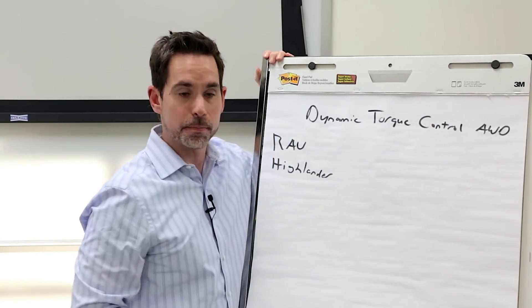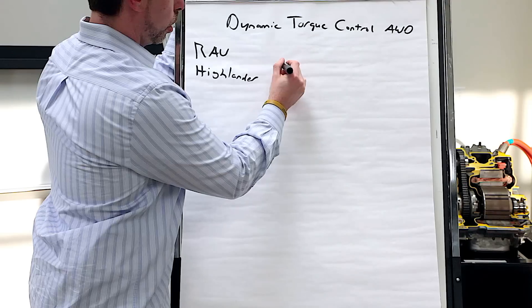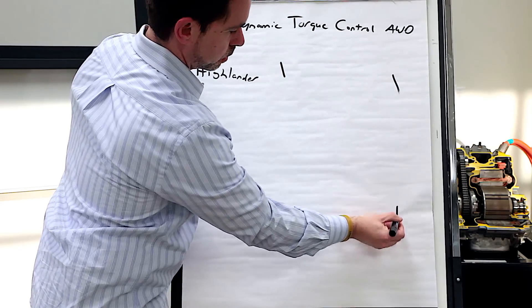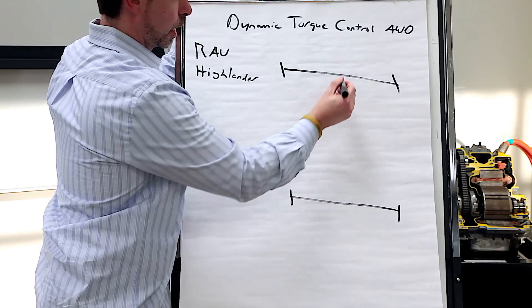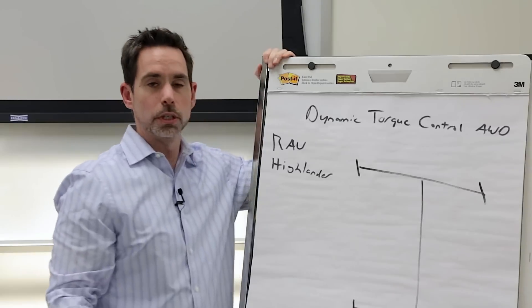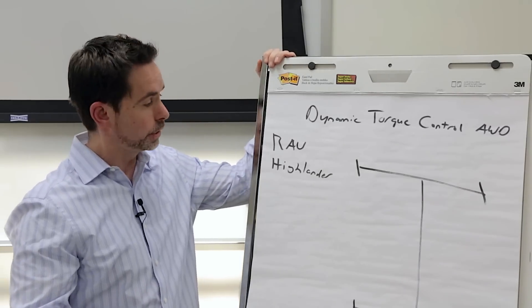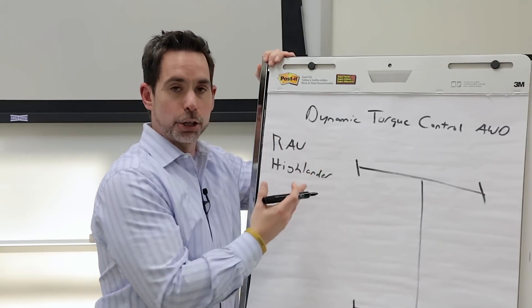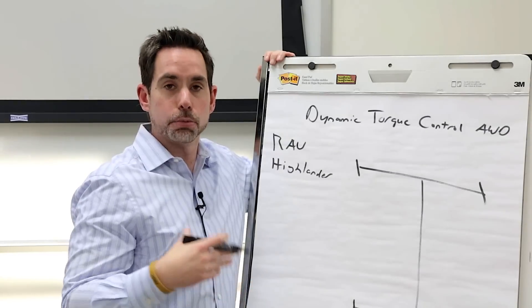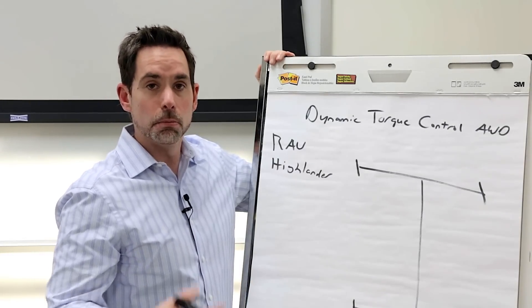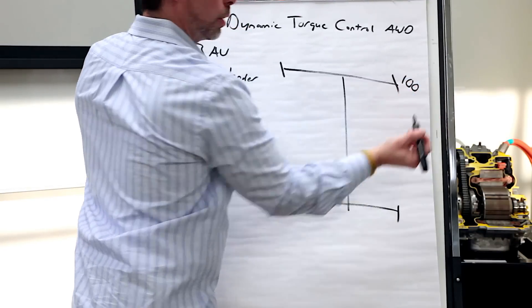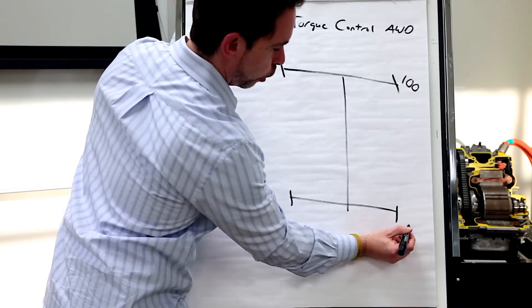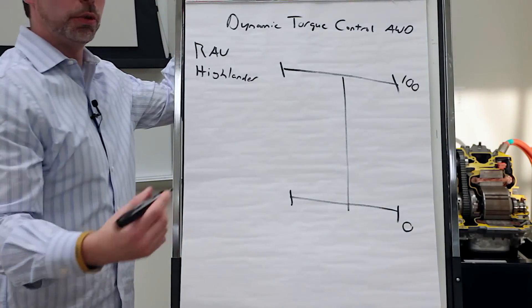So write out the name. The next thing you want to do is draw this. Very easy to do. And then roll into the explanation. For instance, if you're driving around in your RAV or Highlander and it's a bright, sunshiny, dry day, most of the time you're going to have 100% of the power going to the front wheels and no power going to the rear wheels.